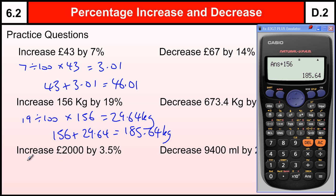£2,000 by 3.5%, so 3.5 divided by 100 times by 2,000. Then you've got 70. And I can add that on without a calculator to get £2,070.